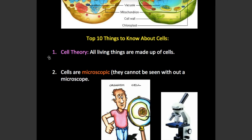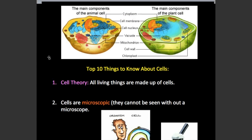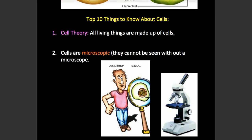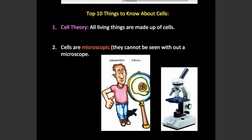The first thing you need to know about cells is that all living things are made up of cells — you, me, plants, bacteria, everything that is living is made up of cells. That's called cell theory. Cells are microscopic, meaning they can't be seen without a microscope. We didn't know cells existed until we had a microscope. Robert Hooke was the first one to discover cells in a cork — he saw little boxes that reminded him of cells like in a monastery or a prison.